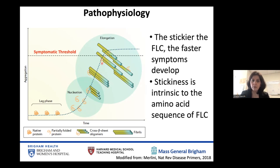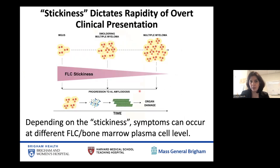The progression of symptoms can occur over several weeks to a few months, where patients were feeling well before and then became progressively more ill. The stickiness of the free light chain is an intrinsic characteristic of the immunoglobulin free light chain. Intuitively, the stickier the free light chain, the more likely symptoms will occur when the plasma cell burden in the bone marrow is relatively small. Even at the time of an MGUS diagnosis, the plasma cell has already decided the genetic sequence of that free light chain, so stickiness is determined very early in the stages of plasma cell disorders.